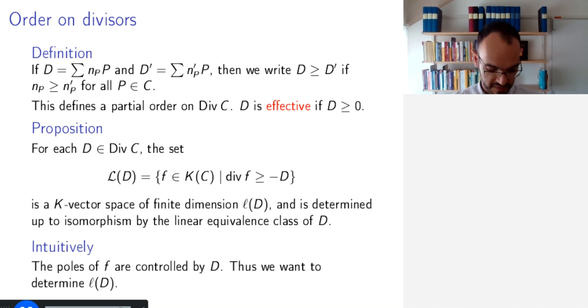So, intuitively, what this means is that the poles of F are controlled by D. Where D has some point with high enough order, then we are allowing a pole, and vice versa. So, we want to determine the dimension of this vector space. This will tell us how many functions have their pole behavior controlled by the divisor D. And that is what we will do using the Riemann-Roch theorem in terms of other properties of the curve.